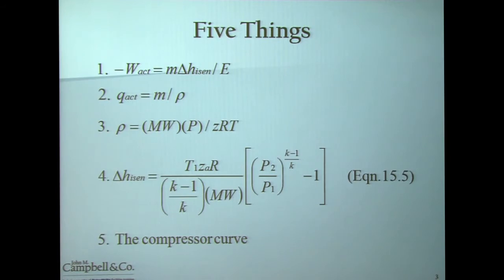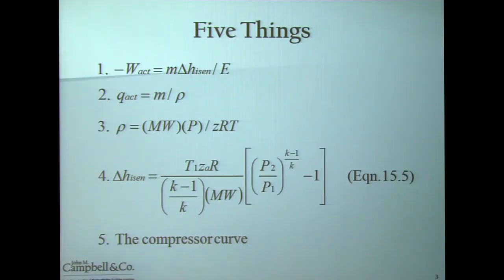The gas density is equal to your molecular weight of your gas times its pressure divided by the compressibility factor times the temperature. The 4th item is the determination of your isentropic head, and this is a big equation which I'll describe in a moment. And the 5th item is the compressor curve. If you have these 5 items available, you'll have a pretty good understanding of how to evaluate a compressor, be it a centrifugal or a positive displacement machine.